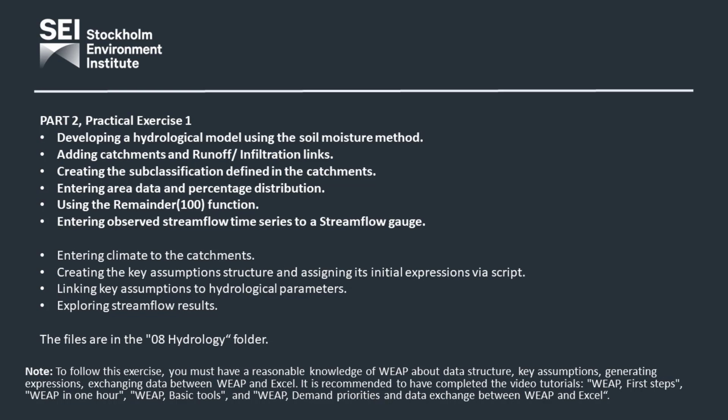We will add catchments and their runoff infiltration links and a stream flow gauge. We will also create the catchment disaggregation and enter their area using the remainder 100 function. Next, we will include the observed stream flow time series in a stream flow gauge and enter the climate data to each catchment. Then, we will create the key assumptions using a script and link them to the hydrological parameters. Finally, we will run the model and explore the results.